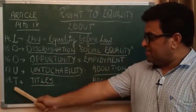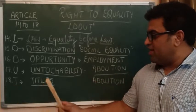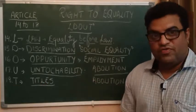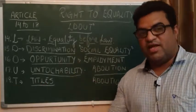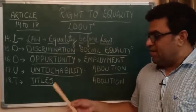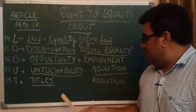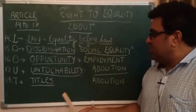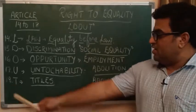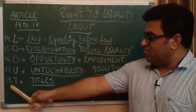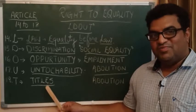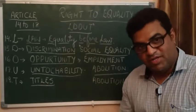The last letter is T. T for titles. The usage of big titles like Rai Bahadur, Raj Bahadur — that has been abolished as per Article 18. Under Article 18 of the Indian Constitution, the usage of titles has been abolished.